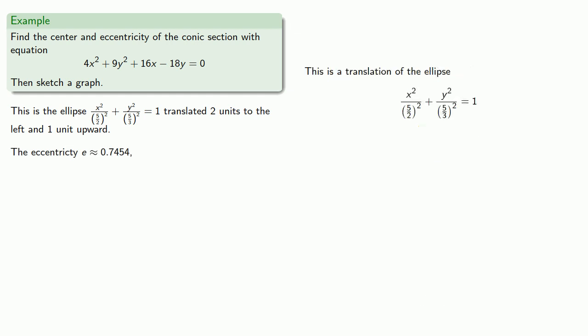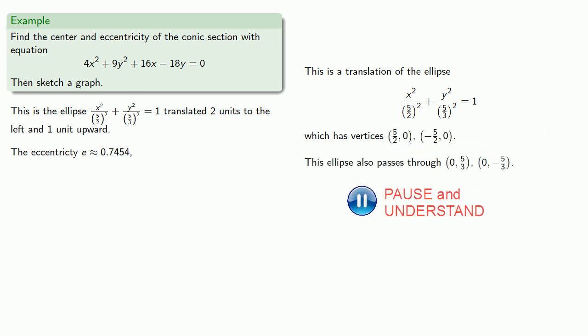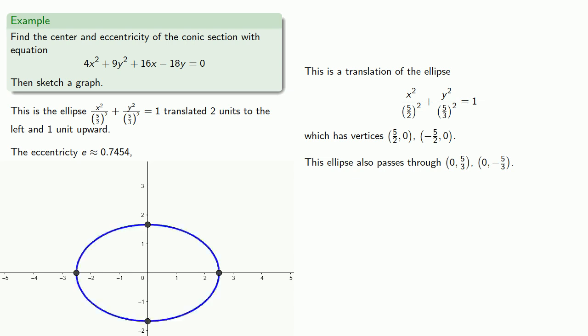This is a translation of the ellipse x²/(5/2)² + y²/(5/3)² = 1. For this ellipse, we have vertices and we also find some other points the ellipse passes through. So we can graph it, and then we translate it 2 units to the left and 1 unit upward.